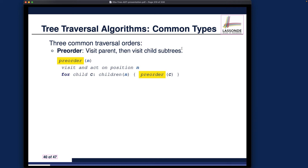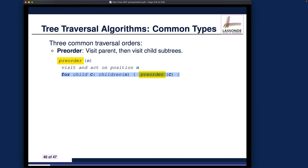This is pseudocode — not exactly Java code, but close enough for exercises on paper. You can see we visit the position (node) n, which is the root of a certain subtree, and then for every child node of n, we recursively call pre-order on that child. This corresponds exactly to the principle: visit the parent, then recursively visit the child subtrees one by one from left to right.